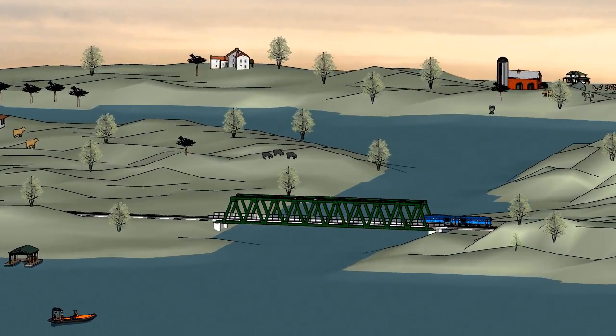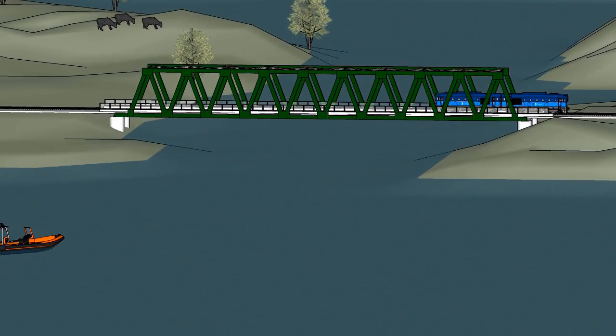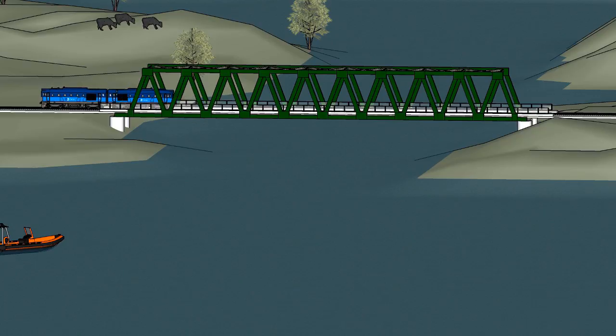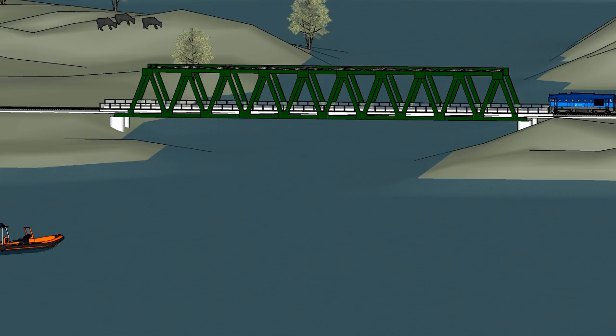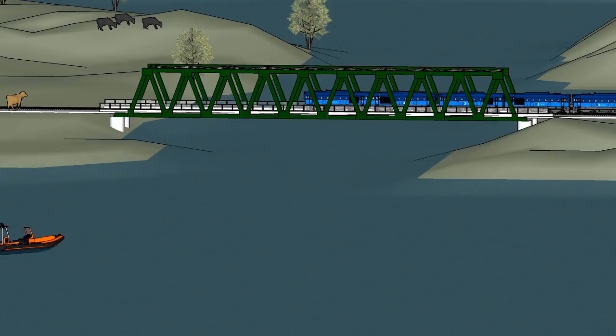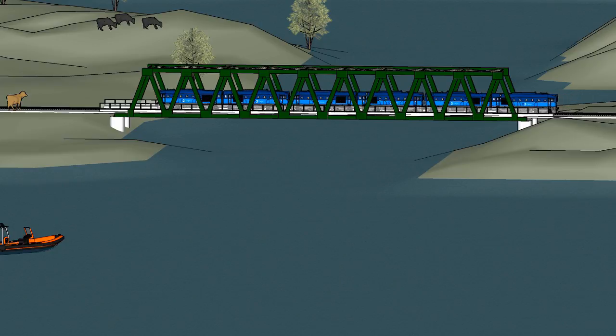Given the nature of the structure, we know it's going to be subjected to loads of various lengths. It could be subjected to the weight of a single train car, and it should also be able to carry the weight associated with multiple cars covering the entire length of the bridge. In this analysis, we consider the weight of the train to be uniformly distributed over its entire length.